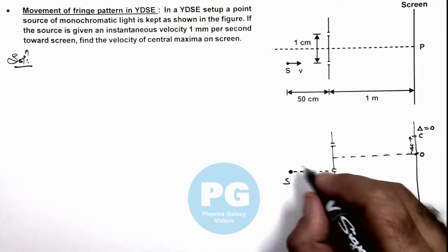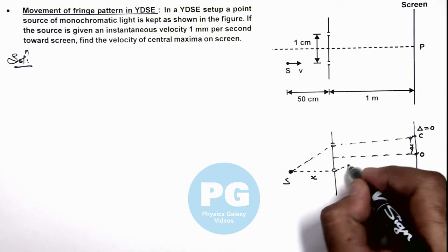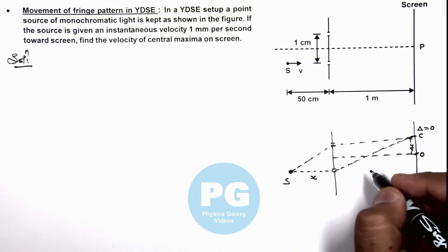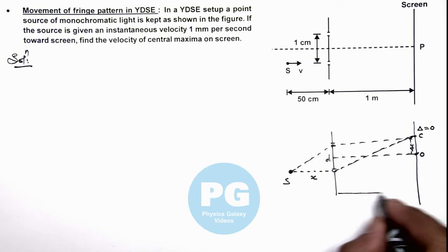Now in this situation, if this separation is taken as d and distance between slit and screen plane is capital D, then here we can see the path difference between the waves before falling on the slits S1 and S2.